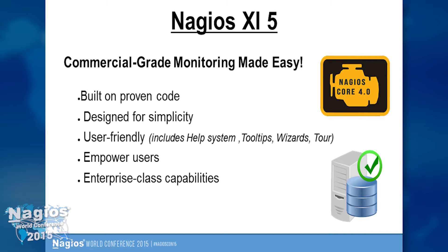XI is much easier to use for new users. Even if you're not familiar with Linux or Nagios, you can jump right in. It's very easy to install — you can use one of the pre-installed VMs or just use the installer. Once you're in the interface, you've got monitoring wizards, a help system, tool tips, tutorial videos, and in XI5 there's a walkthrough tour for new users that guides them through the interface. It also has enterprise-class capabilities like capacity planning and SLA reports, and tools to modify things in bulk.